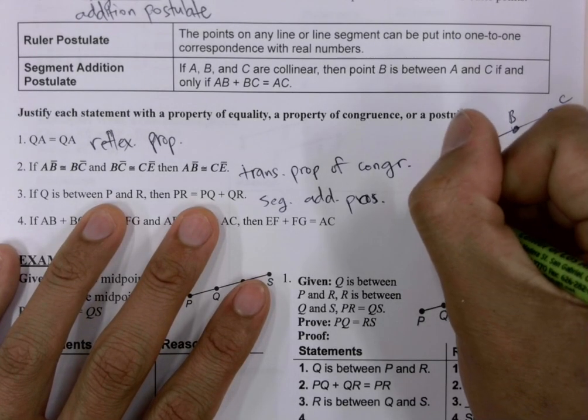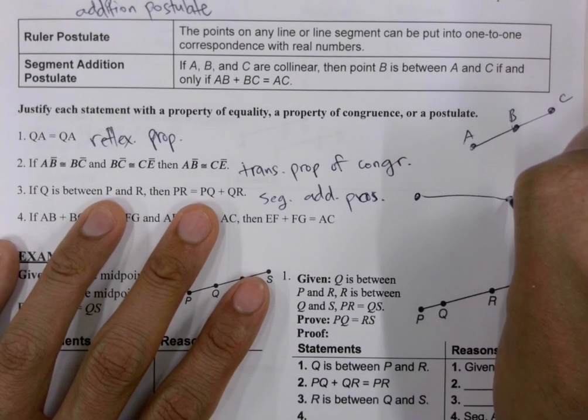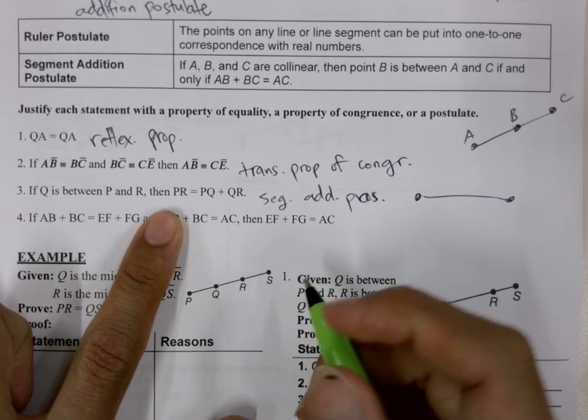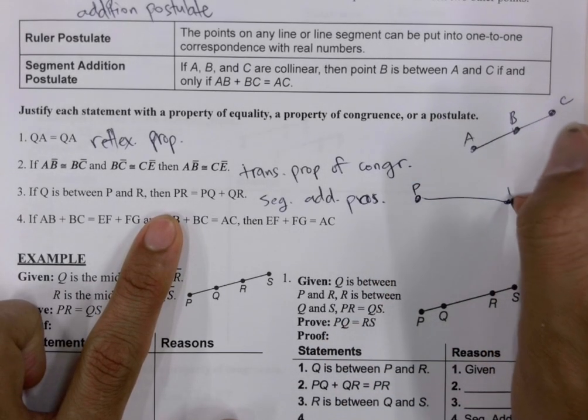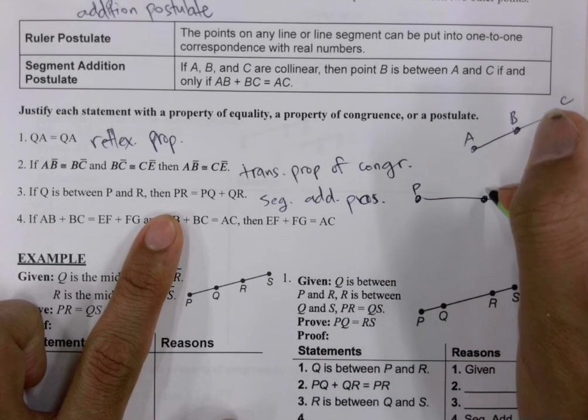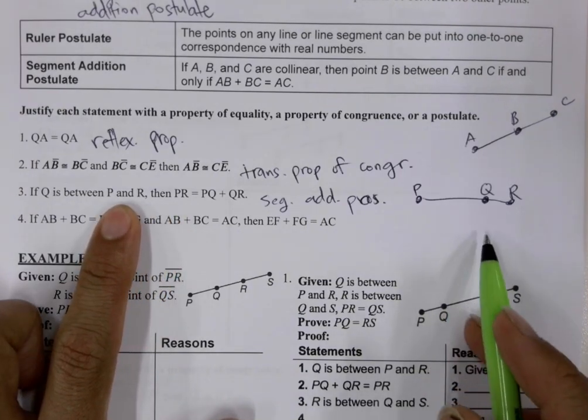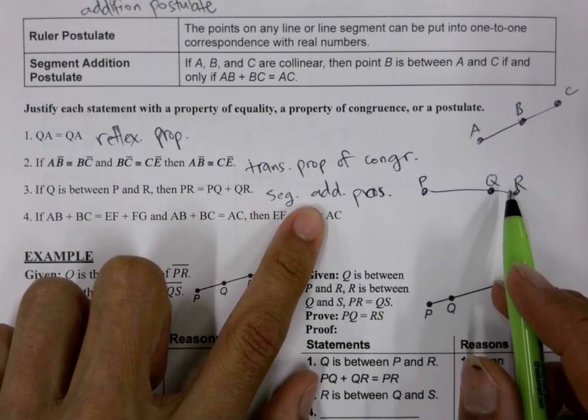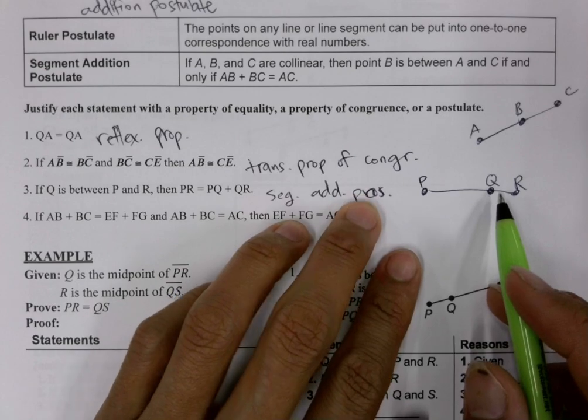And if we drew this out, it would look like this. Q is between P and R. So, P is over here. R is over there. And Q is between P and R.